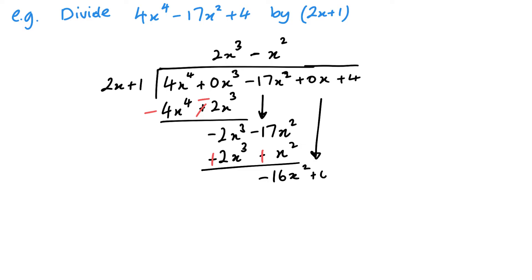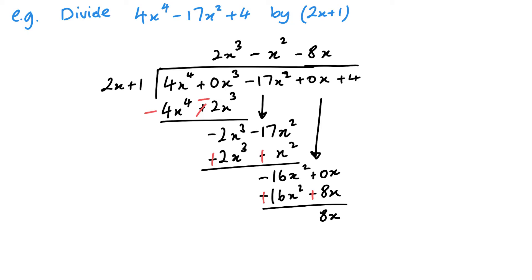Bring down the 0x. Now minus 16x squared divided by 2x gives me minus 8x. Then minus 8x times 2x is minus 16x squared, and multiplying by 1 gives minus 8x. Change the sign and add — that gives me 8x. Bring down my 4.